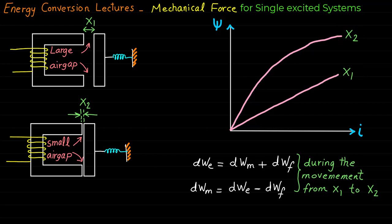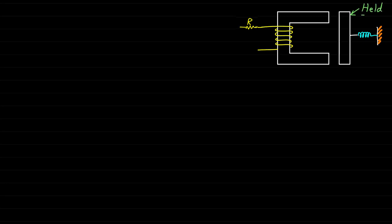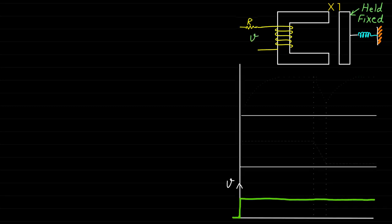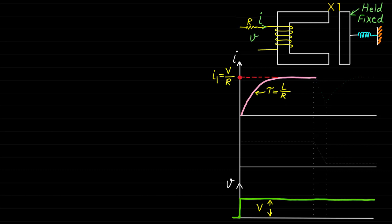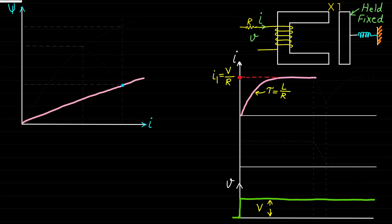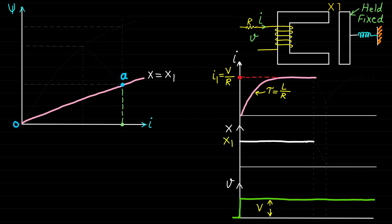Before going further in the mechanical movement explanation, let's first assume that the moving part is held fixed at position X1 and is prevented from movement. Now, if we apply an input voltage V, a current I will flow through the resistance R and the coil. The current I will increase at time constant Tau = L/R until it reaches the steady state point where current I equals I1 = V/R. This steady state operation is represented by point A on the psi-I curve, where the moving part is still at position X = X1 and I = I1 = V/R.